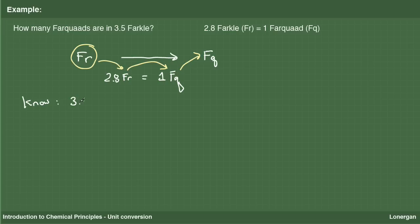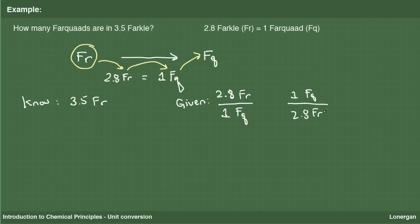It is useful to first think about the path we will take in the calculation without worrying about the specific numbers. The equivalence relations are the stepping stones that we need to get from the start to the finish of the problem, and the units they contain tell us the order and number we need to use. We want to convert from farquad to farquad. As we have an equivalence relation that directly relates the two quantities, we can do this in one step. So let's solve. We know from the problem that we start with 3.5 farquad. From the equivalence relation, we are given two conversion factors: 2.8 farquad per 1 farquad, and 1 farquad per 2.8 farquad.